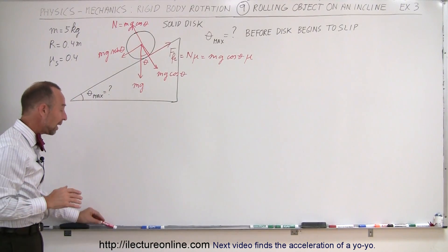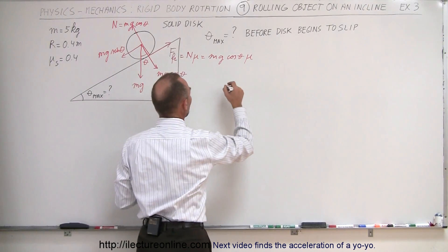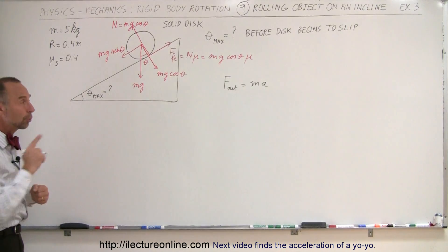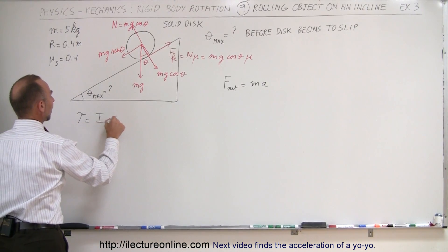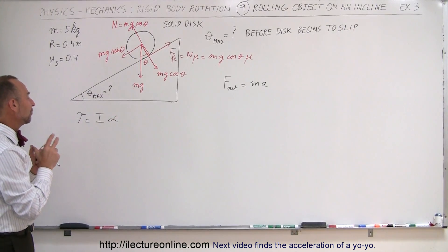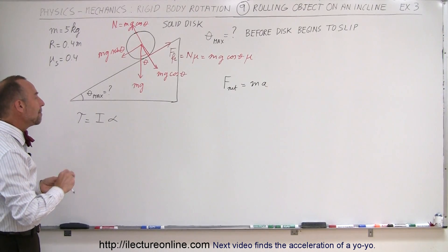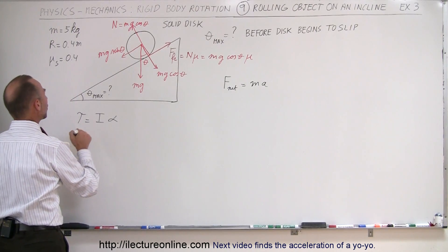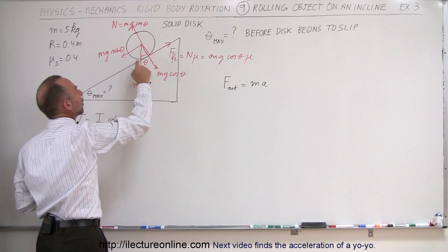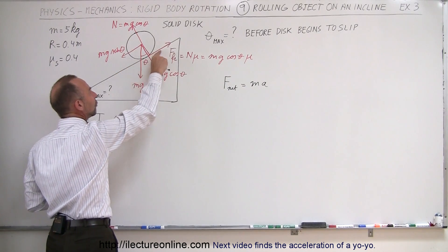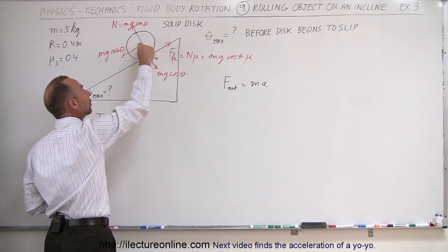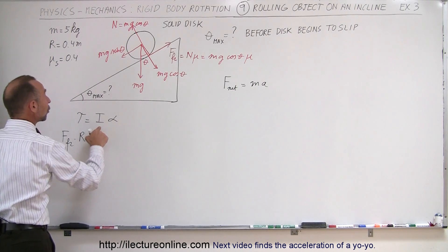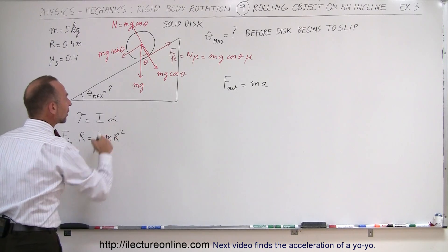The next step is the same as all rolling object problems. We have two equations: the first is Newton's second law, F_net equals mass times acceleration; the second is the rotational equivalent, torque equals I times alpha. The torque causes the wheel to rotate and we want to find the maximum torque and maximum allowable acceleration before the wheel slips. The torque equals the friction force times the radius of the disk, since friction causes rotation and the radius is the perpendicular distance from the point of rotation to the line of action.